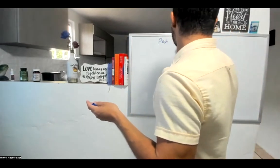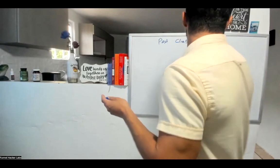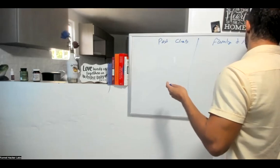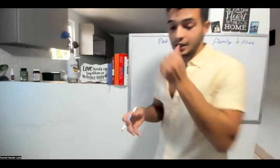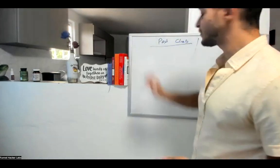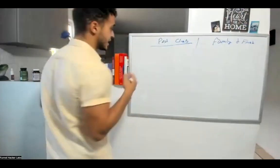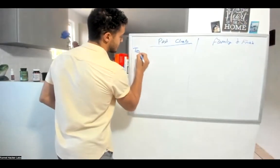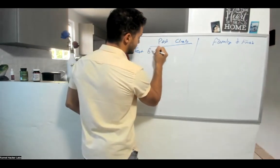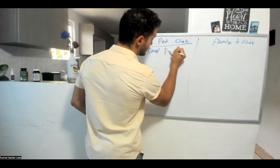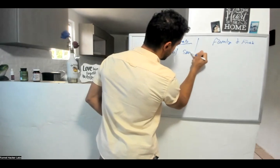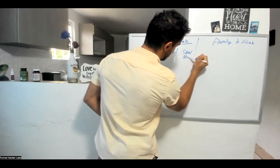How are we going to get a bunch of reviews onto that Google My Business really quickly? There are three sources: past clients, family, and friends. And you're going to hit them with four different outreach methods: text, email, voicemail, and snail mail.